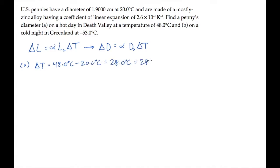We can substitute values and calculate the change in the penny's diameter. It equals alpha, the material constant, times the diameter at the reference temperature, times this change in temperature, giving us 0.0014 centimeters. The final diameter, then, is the initial, or reference diameter, plus this change. And that works out to 1.9014 centimeters.